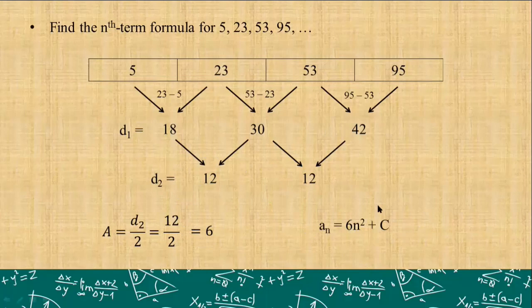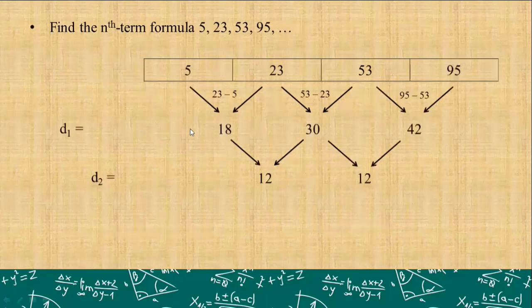We're left with one last variable, plus C. How do we get plus C? We will find what the term is before 5. We'll just work backwards. In other words, we know that d₂ is 12. This means between the missing term and 5, their second difference should be 12.